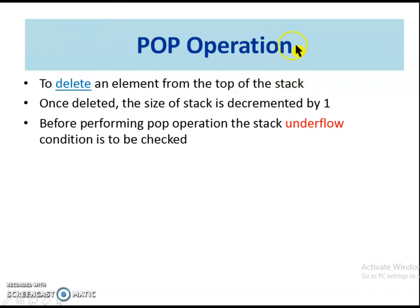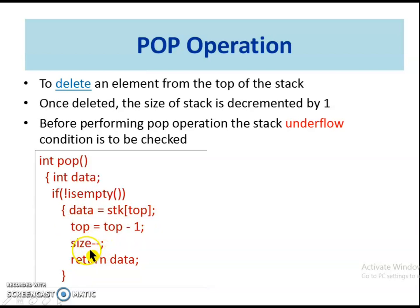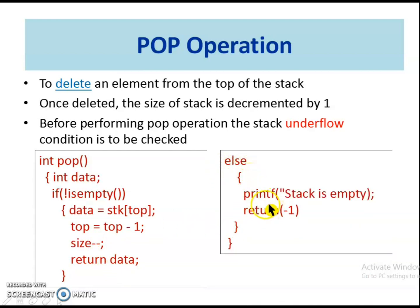Next, let us see the pop operation. Pop is used to delete an element from the top of the stack. The pop function invokes isEmpty to check whether the stack is empty or not, because deletion cannot be performed if the stack is empty. Recall the LIFO property of the stack, i.e. the last inserted element is the first one to be removed. Hence, to delete, retrieve the element from the top of the stack, then decrement the top value and return the retrieved element. To keep track of the size, the variable size is decremented by 1 once the element is deleted. If isEmpty is true, the message stack empty is printed and the value minus 1 is returned.